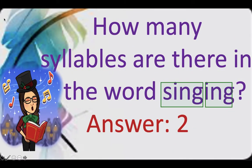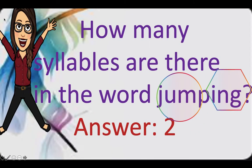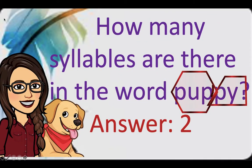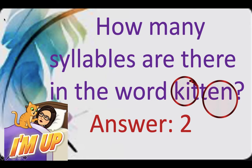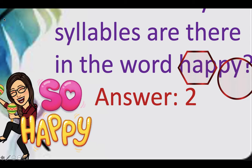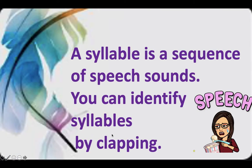Now have a look at this. How many syllables are there in the word 'singing'? We say sing-ing, dividing it into two syllables. The same goes for 'jumping' — jump-ing, two syllables. And 'puppy' is divided into two syllables, as is 'kitchen' and 'happy' — each divided into two syllables.